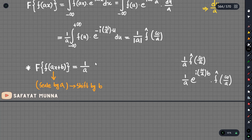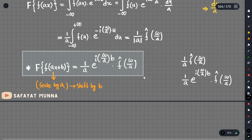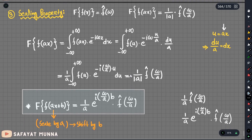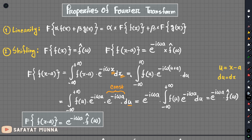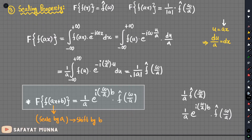The final result is 1 by a times e to the power i times b times omega over a times f-hat of omega divided by a. This is the combined shifting and scaling property. If you want to see the next video, we will continue with the next properties.